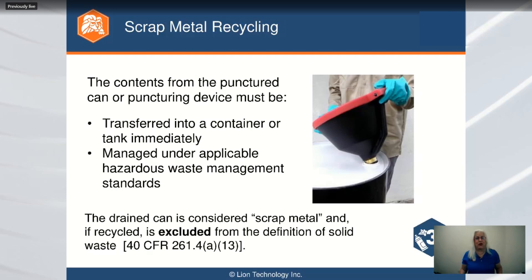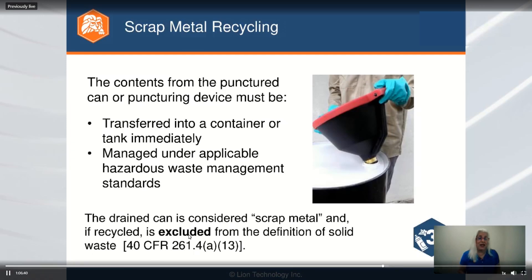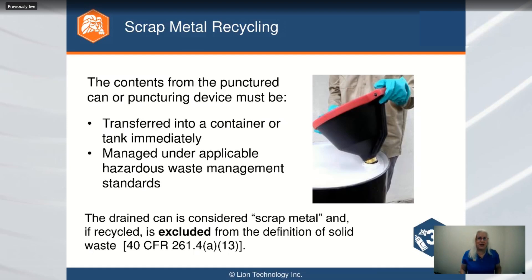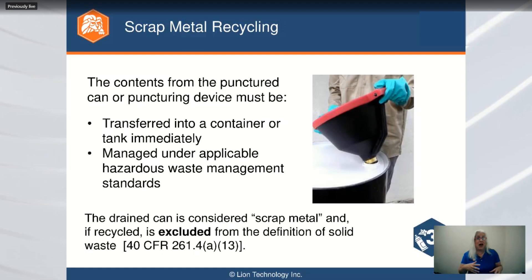When you use a puncturing device, two things happen. Unless it's a P-listed aerosol can, once you puncture it you definitely know that it is RCRA empty at that point. You can then send it for scrap metal recycling. The contents come out — a lot of these devices attach to the top of a 55-gallon drum. You cannot use an ice pick; it has to be the standardized device.